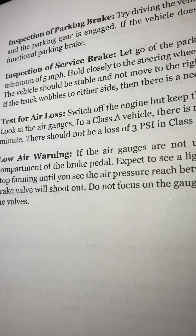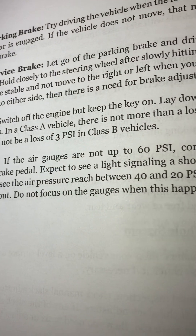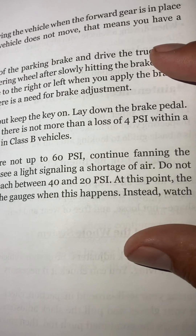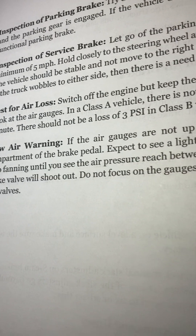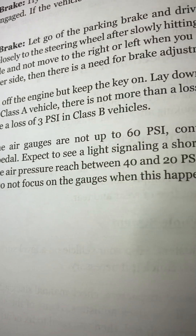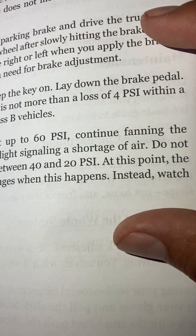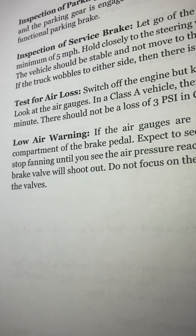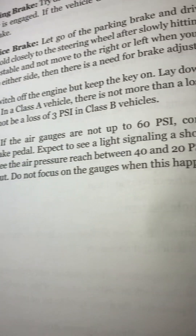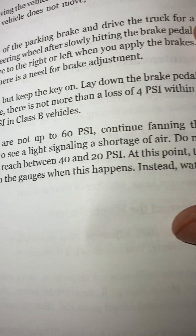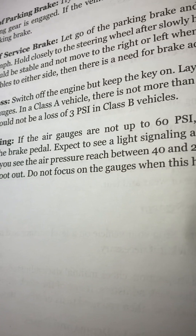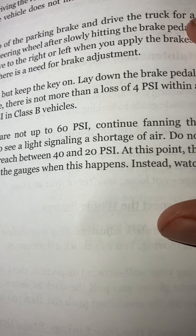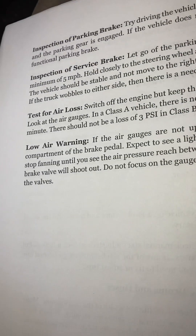Low air warning: if the air gauges are not up to 60 PSI, continue fanning the brake pedal. Expect to see a warning light signaling a shortage of air. Do not stop fanning until the air pressure reaches between 40 to 20 PSI. At this point, the brake valve will shoot out. Do not focus on the gauges when this happens — instead, watch the valves.